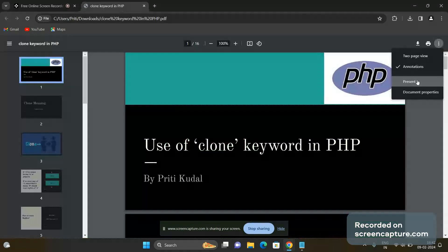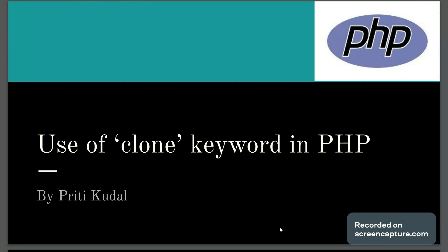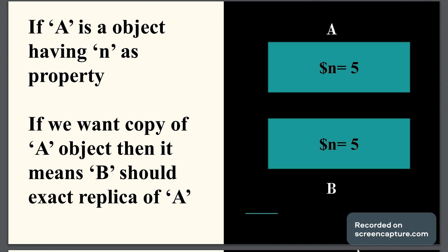Welcome. Let's learn the use of the clone keyword in PHP. What do you mean by clone? The meaning of clone is duplicate, copy, replica, or mirror. So when we want to make a copy of one object, we can use the clone keyword in PHP. Cloning an object means making a replica or duplicate copy — a mirror copy of an object.